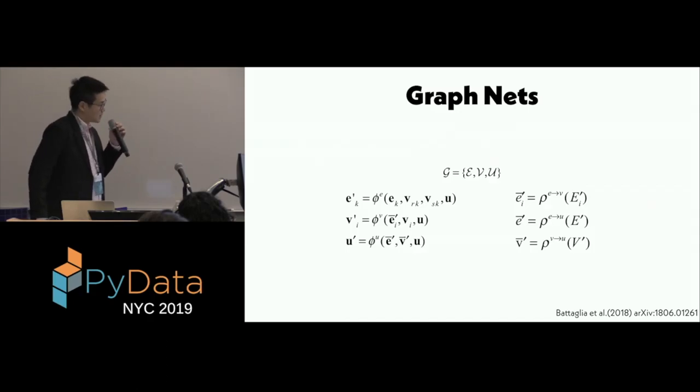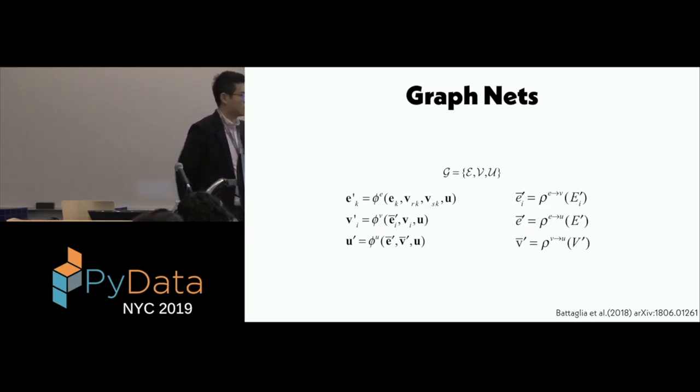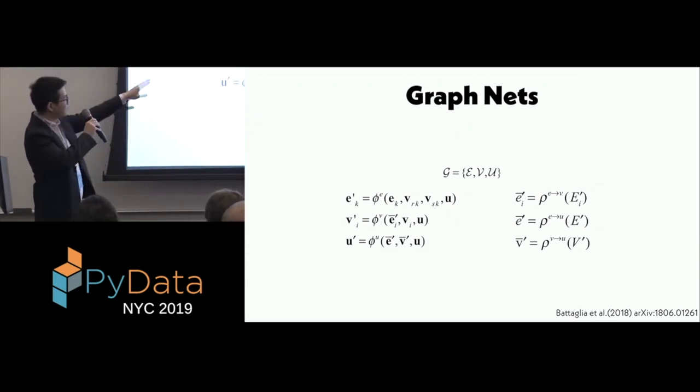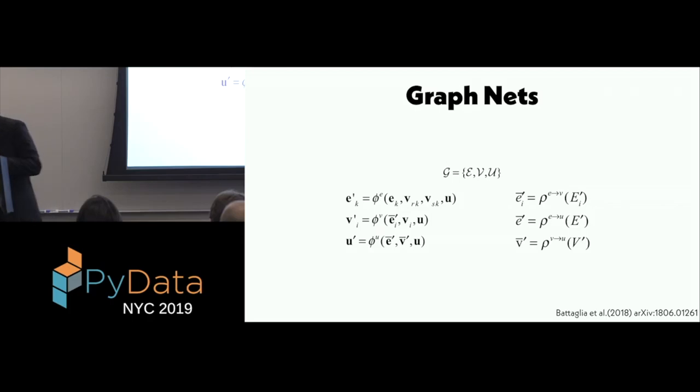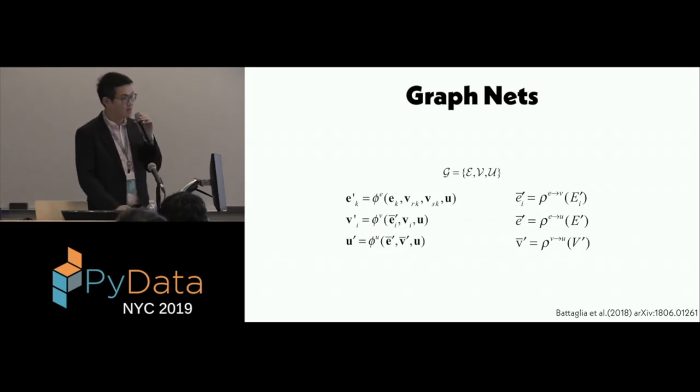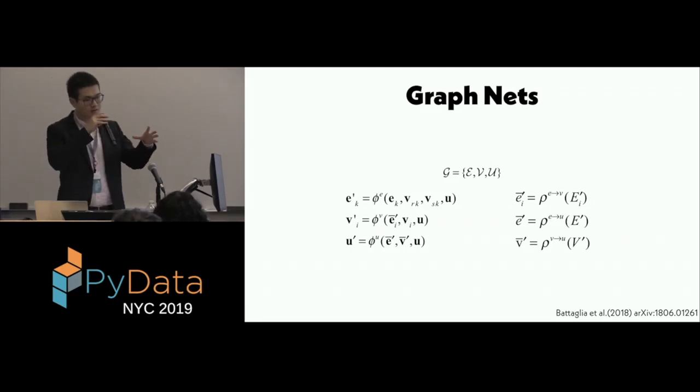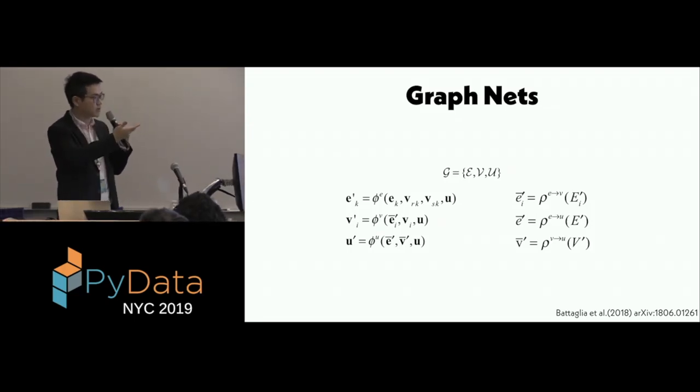So graph-nets is a set of six functions that operates on the topological space of the graph. The three functions on the left are update functions, and the three functions on the right are aggregate functions. The aggregate functions will just aggregate information from a set of entities to an object with the same dimensionality of each element in that set. For example, typical choices of aggregate functions include sum or average or max.